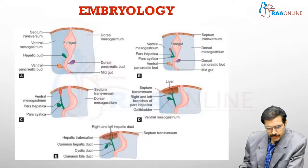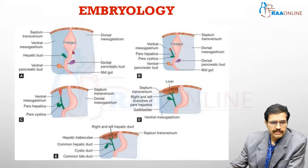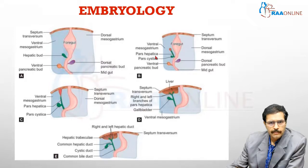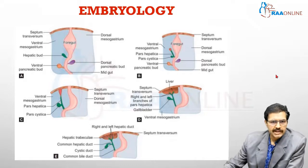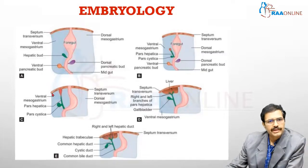No topic in pediatric surgery is complete without an analysis of the embryology behind it. The foregut, from its ventral aspect, gives rise to what is called the hepatic bud. The hepatic bud grows into the ventral mesogastrium and as it grows, it divides into two components: one is called pars hepatica and another is called pars cystica.